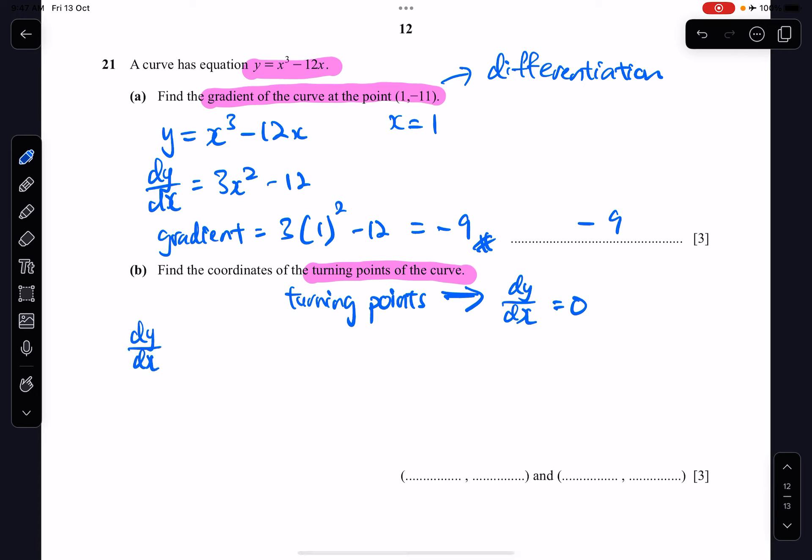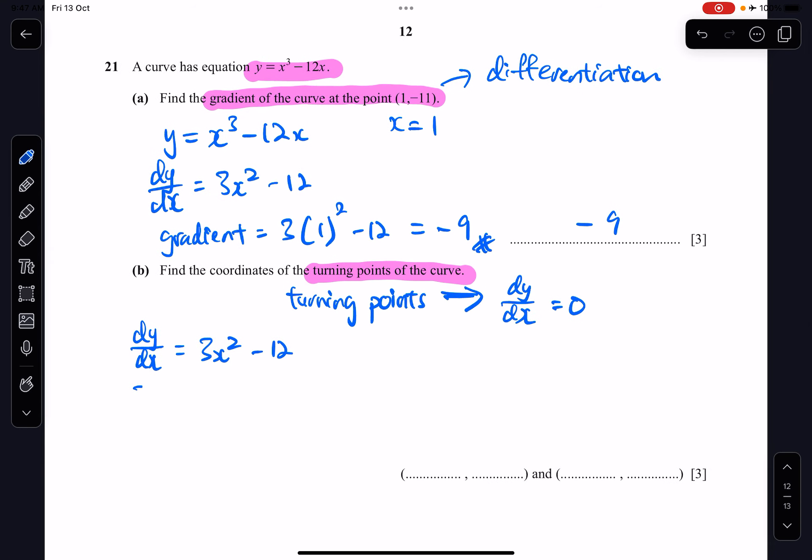So since I already know that my dy dx is equals to 3x squared minus 12 from part A, now I let it be 0. So I'll have 3x squared minus 12 equals to 0. I need to solve this quadratic equation. So I factorize out 3.